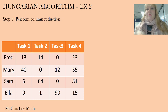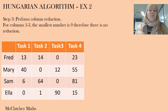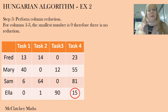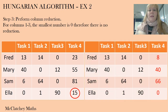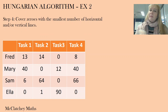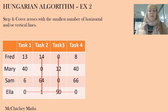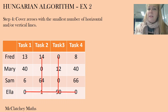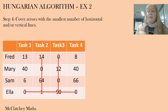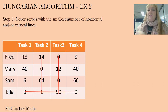Now we perform column reduction — the same as row reduction but applied to columns. For columns one to three, the smallest number is already zero, so no reduction is needed. But in column four, the smallest number is 15, so we subtract 15 from everything in column four, giving us a zero there. Now we cover the zeros again with the smallest number of lines: one, two, three. Still only three lines — this is still a problem because I need four lines for the optimum allocation.